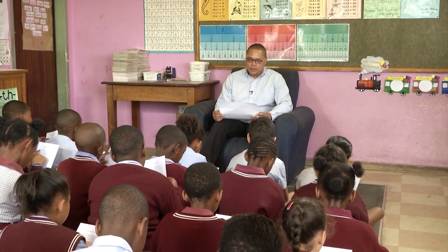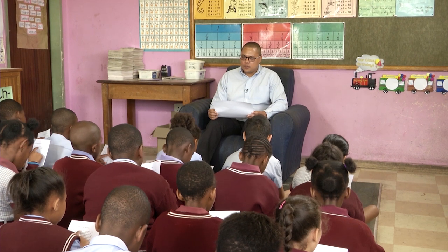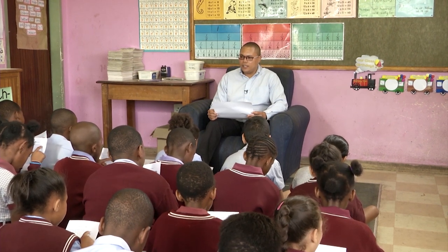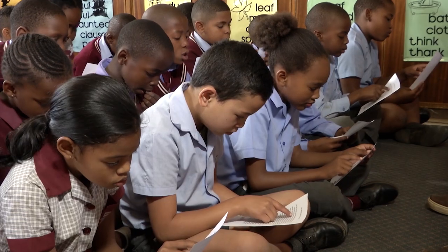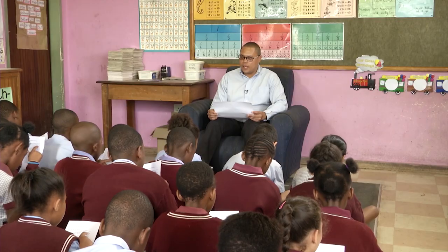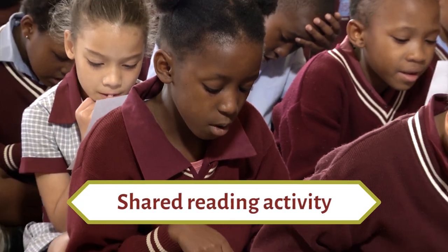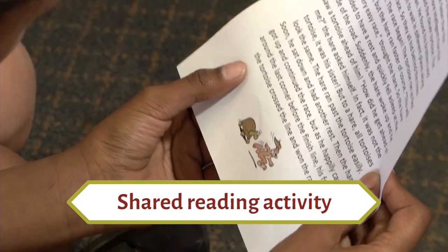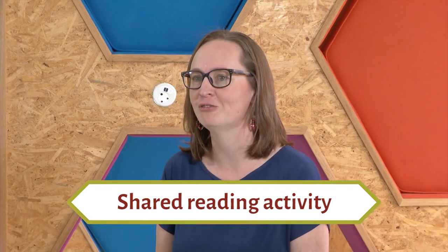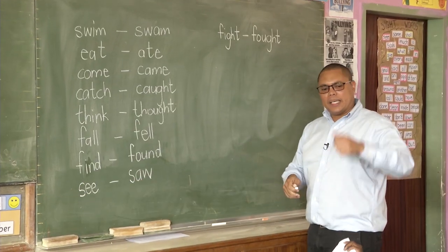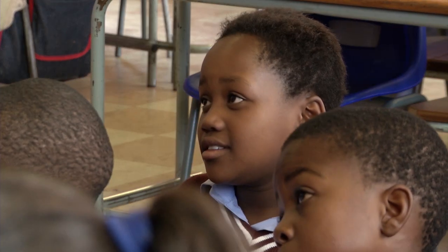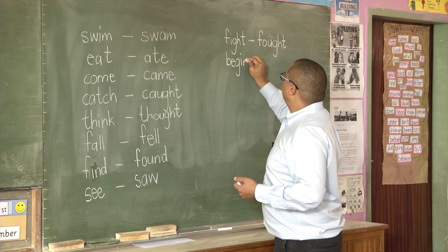Let's read together. One day the hare and tortoise decided to have a race. The hare knew that he could run faster than the tortoise. Mr. Goos started his lesson on the carpet as a whole-class shared reading lesson. He accommodated the large class size by giving each learner their own piece of paper to read from, instead of a big book. He allowed learners to follow with their fingers, promoting kinesthetic involvement. Drawing on their previous knowledge of past tense, Mr. Goos built further on this.